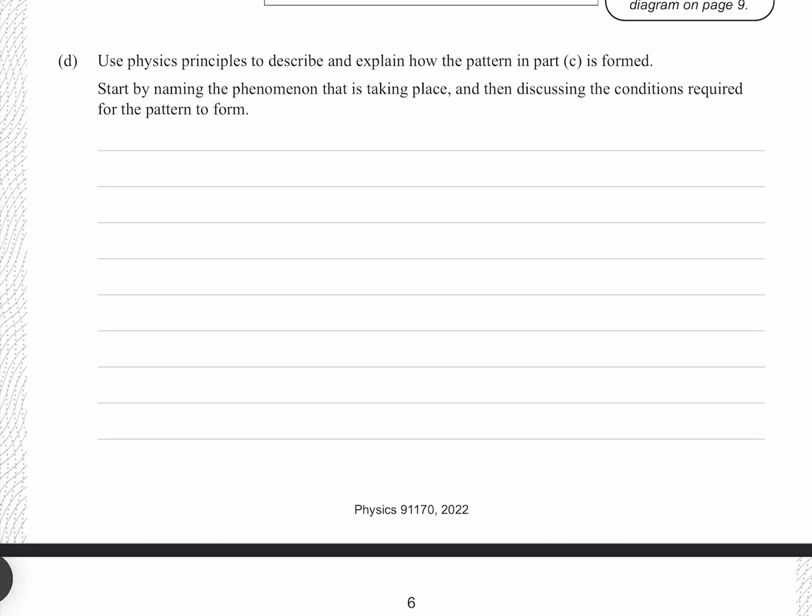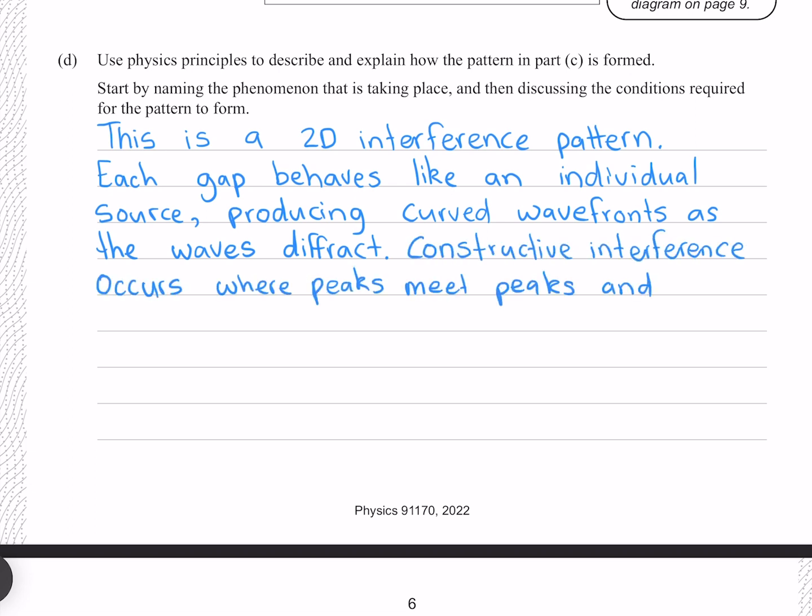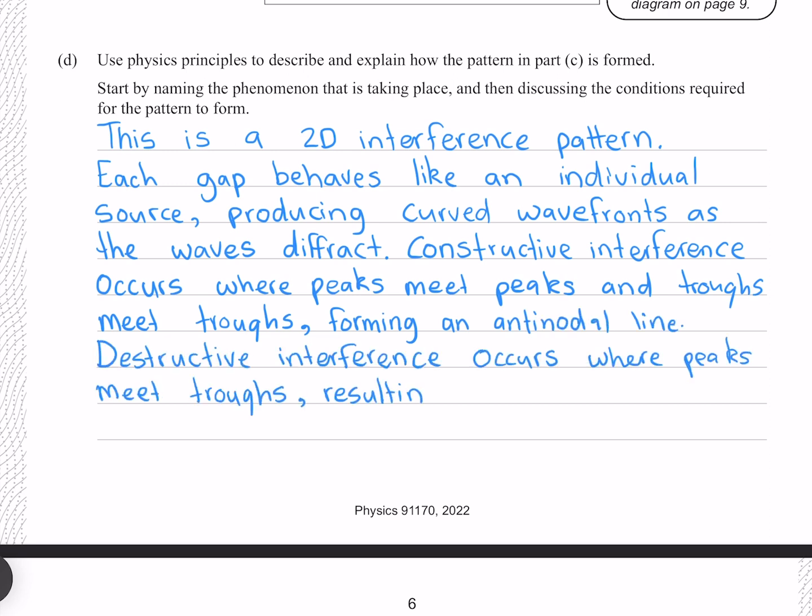Use physics principles to describe and explain how the pattern in part C is formed. Start by naming the phenomenon that is taking place, and then discussing the conditions required for the pattern to form. This is a 2D interference pattern. Each gap behaves like an individual source, producing curved wavefronts as the waves diffract. Constructive interference occurs where peaks meet peaks and troughs meet troughs, forming an antinodal line. Destructive interference occurs where peaks meet troughs, resulting in a nodal line.